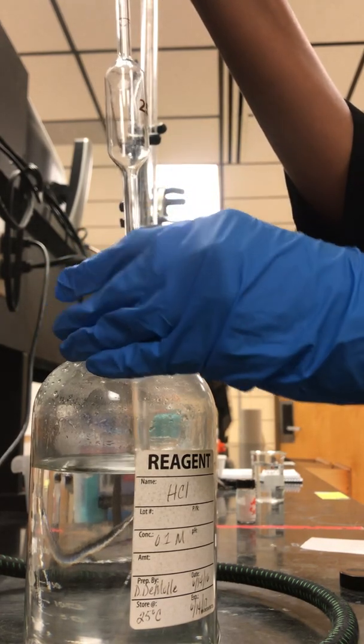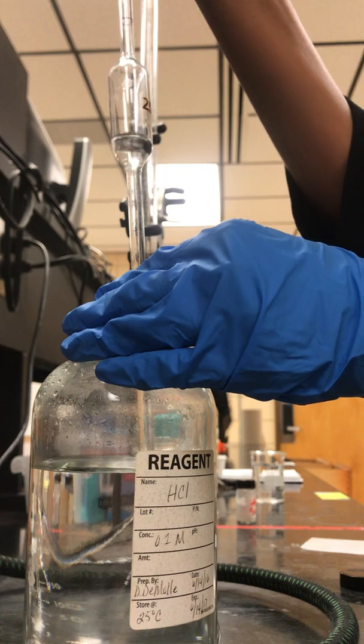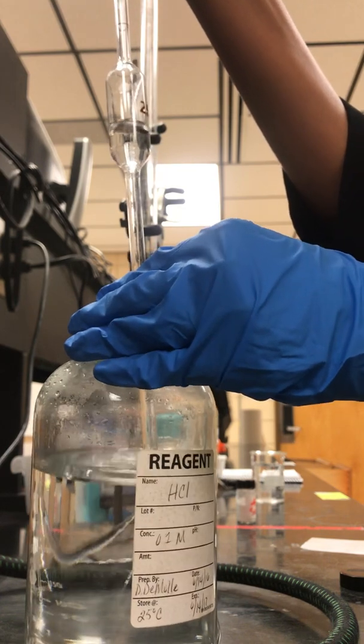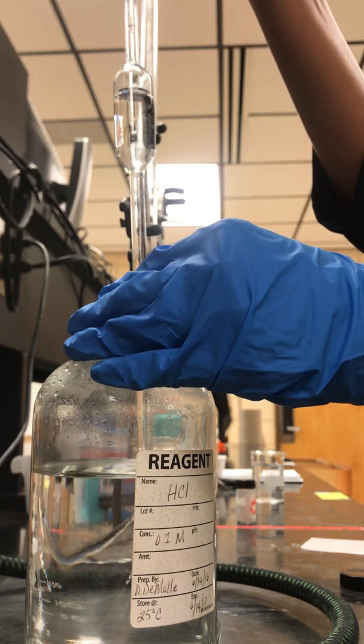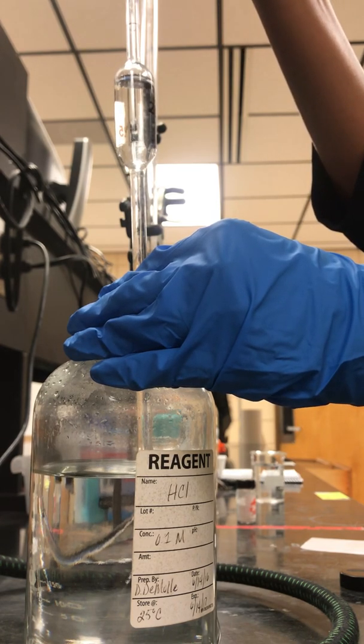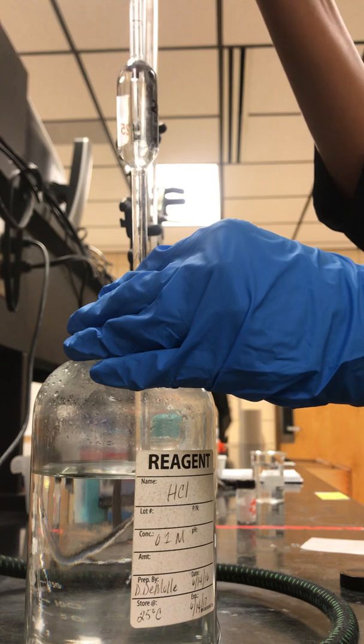You have S for suck and E for expel. Stick the tip in and press the S to suck the liquid up. The liquid goes inside the pipette. Make sure you get the meniscus right where that tick mark or graduated mark is.